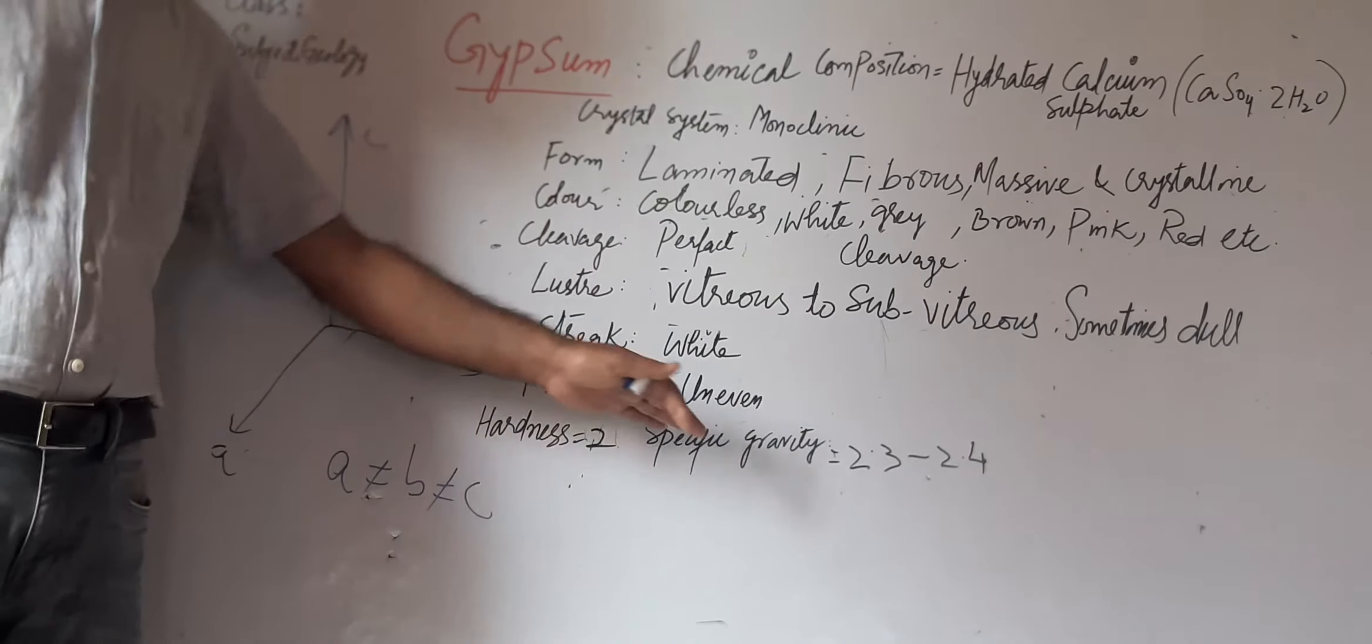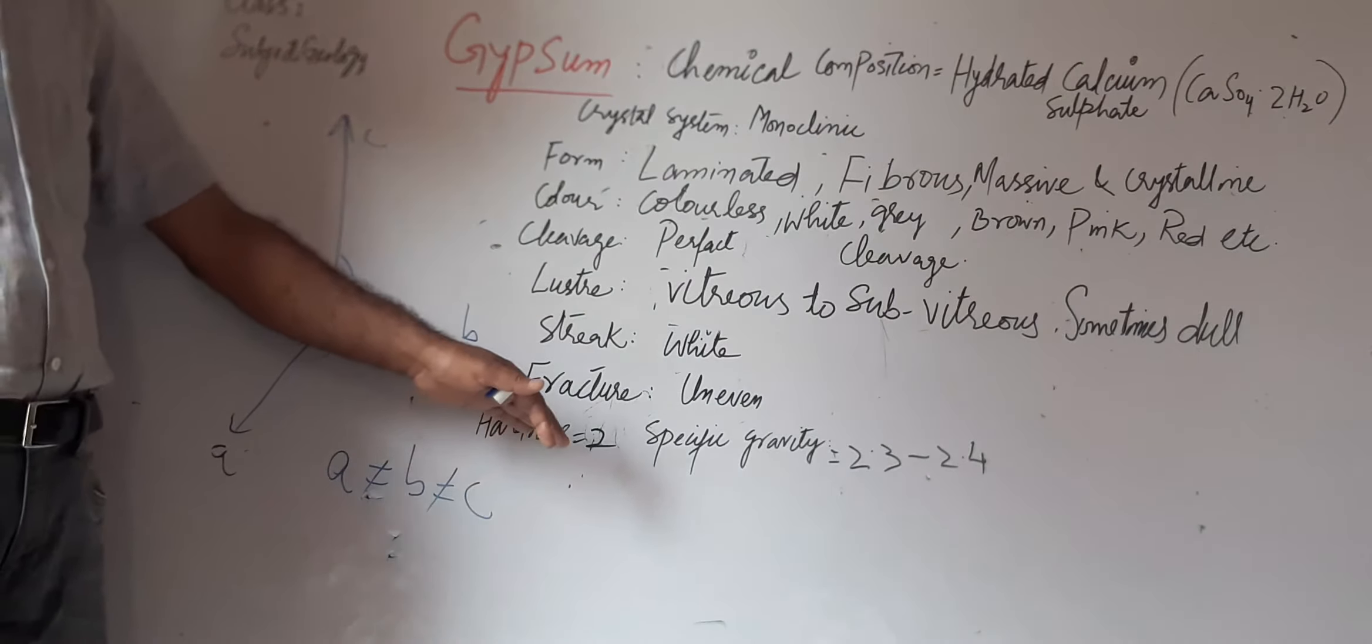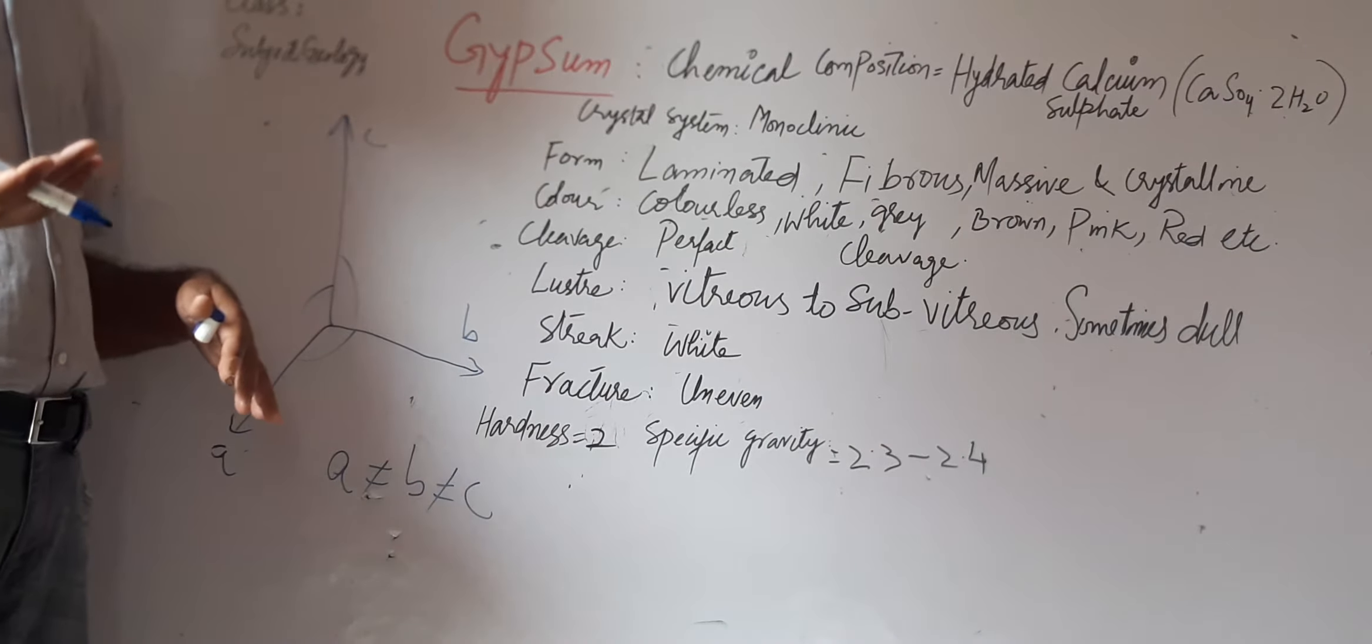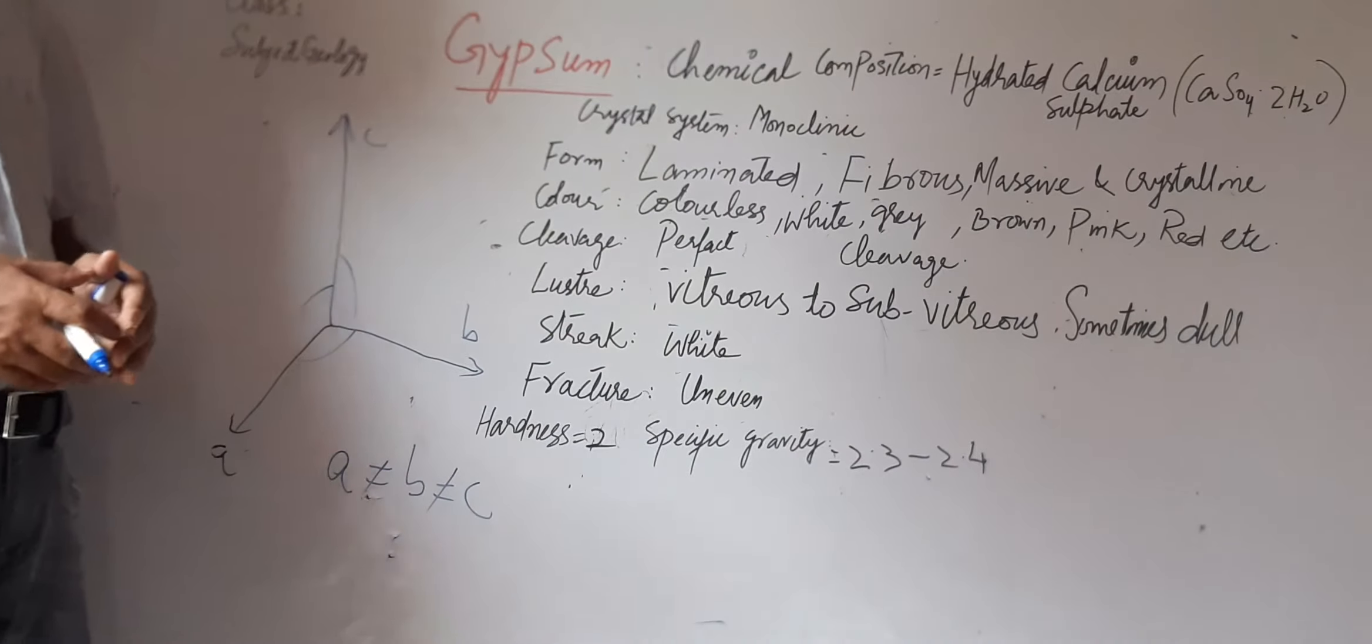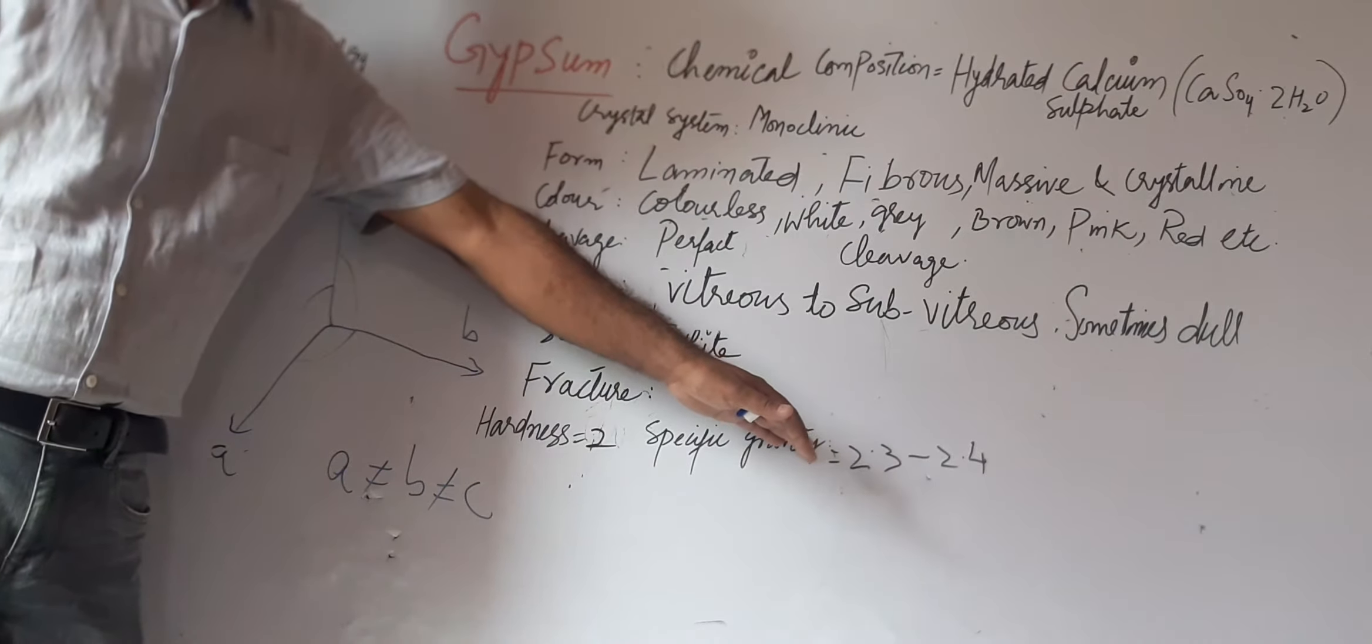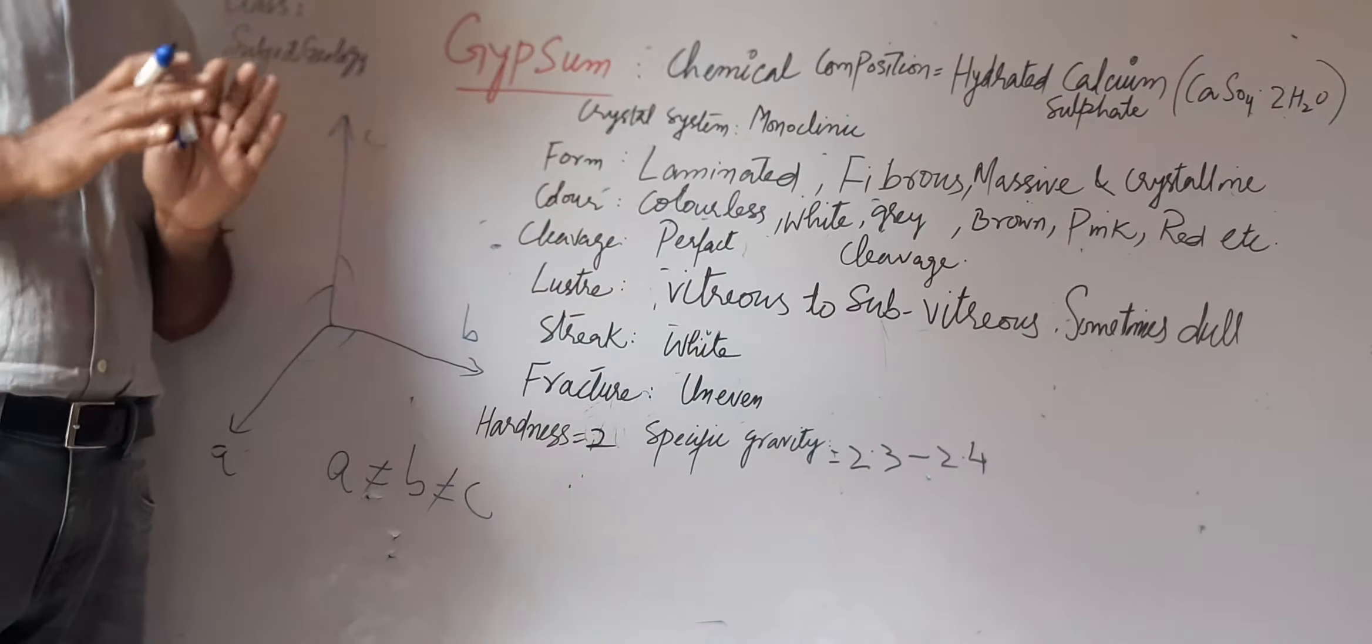Hardness of this gypsum is 2, and specific gravity is 2.3 to 2.4. As per the Mohs scale of hardness, gypsum is at the second number. Specific gravity is determined with the help of Jolly's balance. So the specific gravity after determination—the gypsum has 2.3 to 2.4 specific gravity.